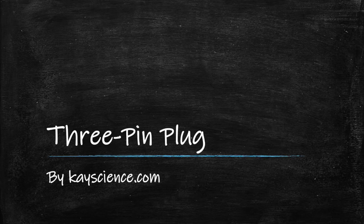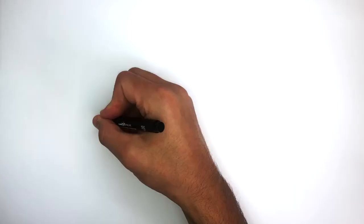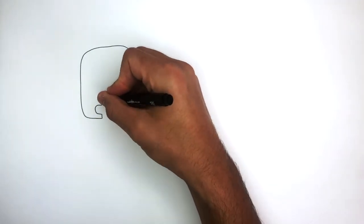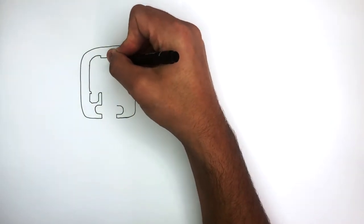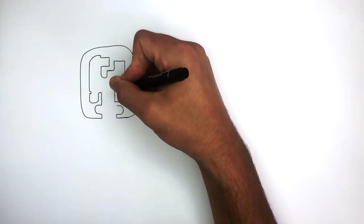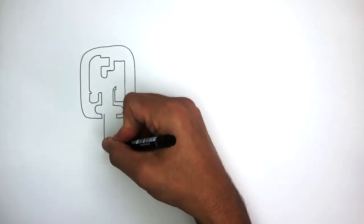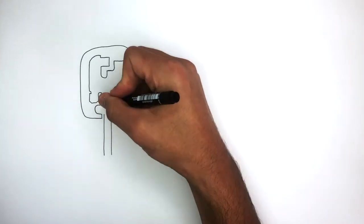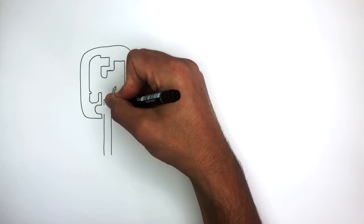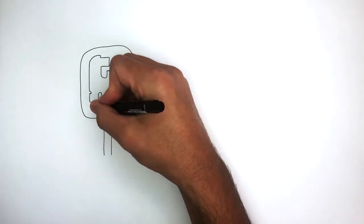Three Pin Plug by KScience.com. What I'm drawing here represents the insides of a three pin plug. This is the plastic casing on the insides. This represents the three core cable which goes inside the three pin plug and is held in place by the cable grip.